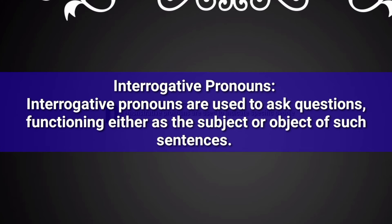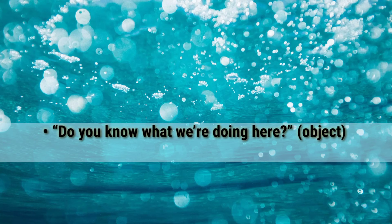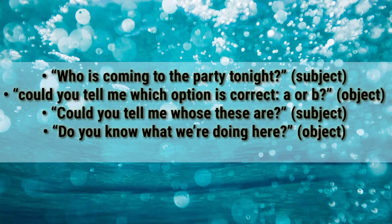Interrogative pronouns. Interrogative pronouns are used to ask questions, functioning either as the subject or object of such sentences. There are five primary interrogative pronouns: 'who,' 'whom,' 'whose,' 'which,' and 'what.' Example sentences: 'Who is coming to the party tonight?' — here 'who' is used as the subject. 'Could you tell me which option is correct, A or B?' 'Could you tell me whose these are?' 'Do you know what we are doing here?' — here 'what' is used as an object.